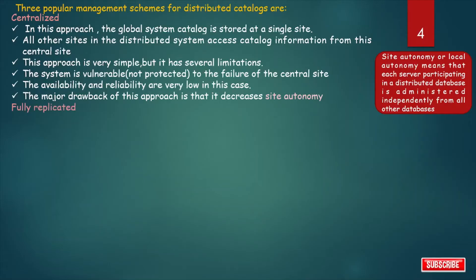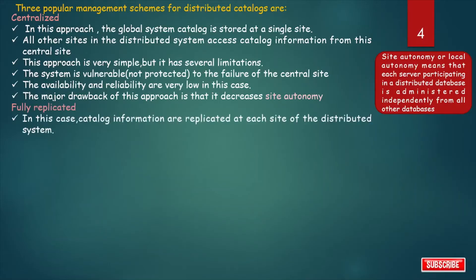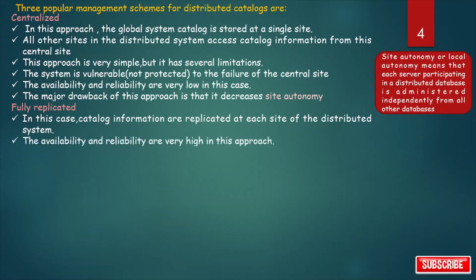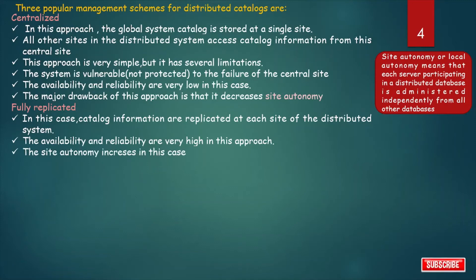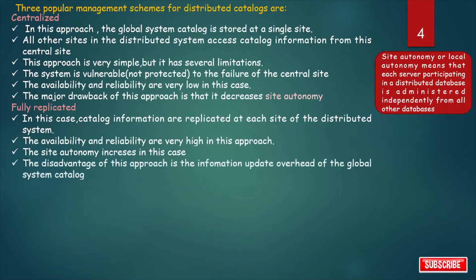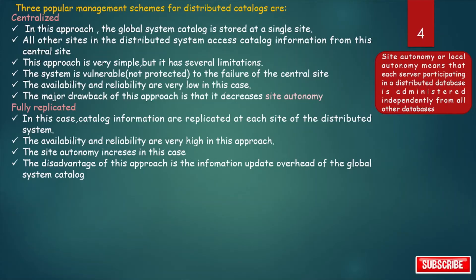The next scheme is Fully Replicated. In this case, catalog information is replicated at each site of the distributed system. Availability and reliability are very high because catalog information exists at all sites, and site autonomy increases since there is local control at each site. However, the disadvantage is the update overhead: if one replica is updated, all other replicas must also be updated.